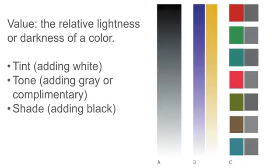Value is the relative lightness or darkness of a color. A tint is created by adding white to a pure hue. A tone is created by adding gray or a complementary color to a pure hue. And a shade is created by adding black to a pure hue. Blue, violet, and green are inherently darker in value than pure yellow or orange. The primary colors are the most intense. This intensity generally diminishes when colors are mixed.